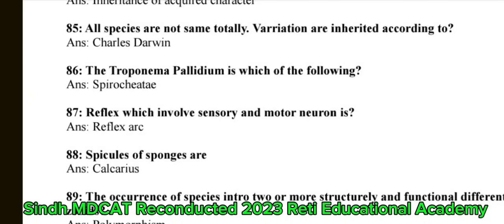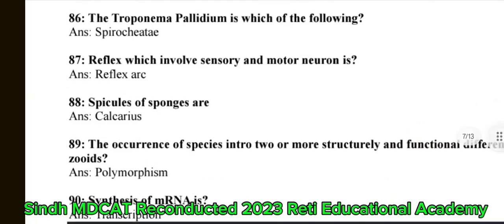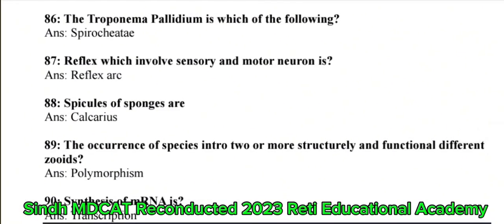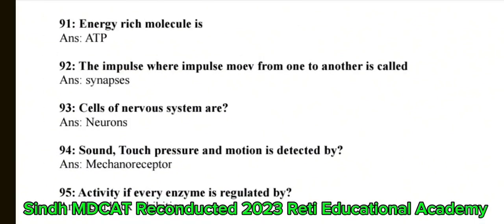Question 87: Reflex which involves sensory and motor neuron is reflex arc. Question 88: Spicules of sponges are calcareous. Question 89: Occurrence of a species into two or more structurally and functionally different zooids — the correct answer is polymorphism. Question 90: Synthesis of mRNA — the correct answer is transcription. Question 91: Energy-rich molecule — the correct answer is ATP. Question 92: Where an impulse moves from one neuron to another is called a synapse. Question 93: Cells of the nervous system are neurons.